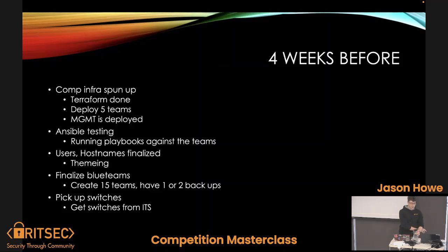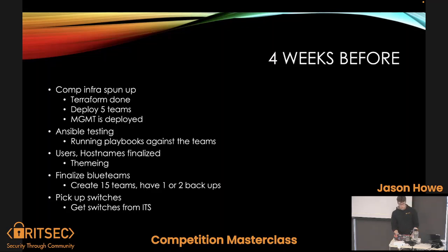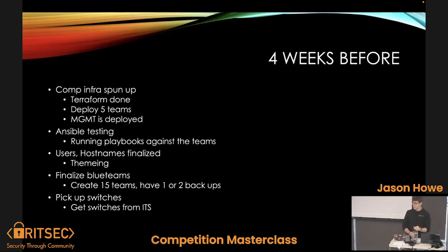About four weeks before, you spin up the competition infrastructure. This time around, we deployed five teams — teams one and two as control teams, and teams three, four, and five for testing. Windows had a team, Linux had a team, and logging had another team, so they could test independently. We built our playbooks and ran them against all teams. Blue teams were created through the sign-up form, and the switches were obtained from ITS.